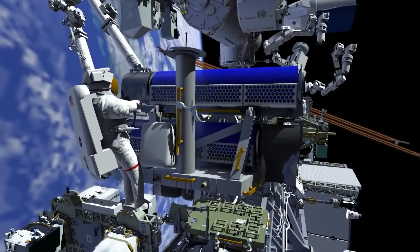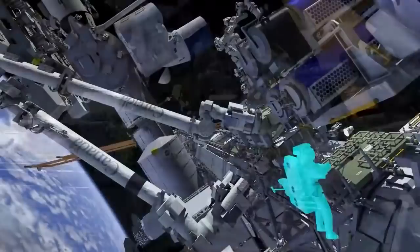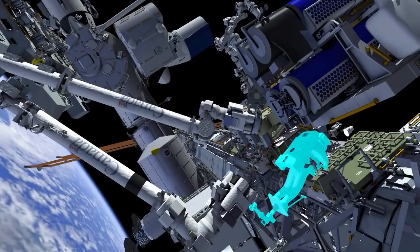He changes out his pistol grip tool and makes his way down to the crew and equipment translation aid, or CETICART, and retrieves the foot restraint that he'll use on the end of the arm for his work with IROSA. He installs the foot restraint at the end of the arm, puts it in the right position, and ingresses the arm.